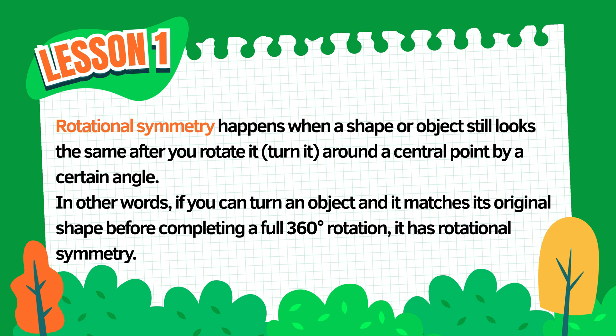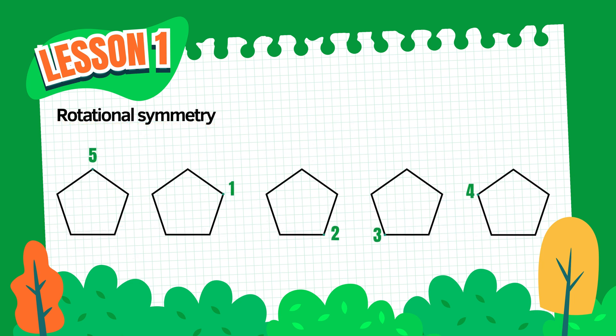In simple terms, if you can turn a shape and it matches its original position before a full 360-degree turn, then it has rotational symmetry. Let's look at some examples. First, the regular pentagon. When we rotate it around its center, it fits into itself five times in one full turn. So we say it has rotational symmetry of order five because it matches its shape five times in 360 degrees.